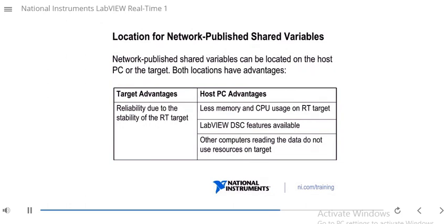Another consideration: every time a target reads from network published shared variables, it uses resources on whatever target hosts them. If multiple computers and RT targets are reading the variables, it's better to host them on a host computer with more resources, so it can handle the load without impacting RT target performance.